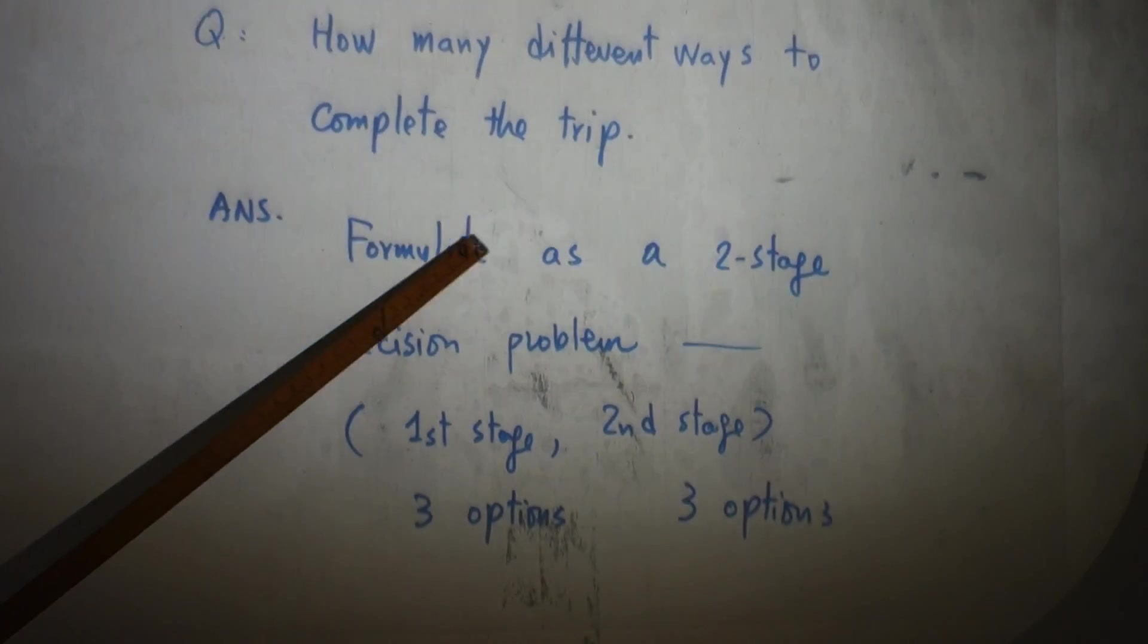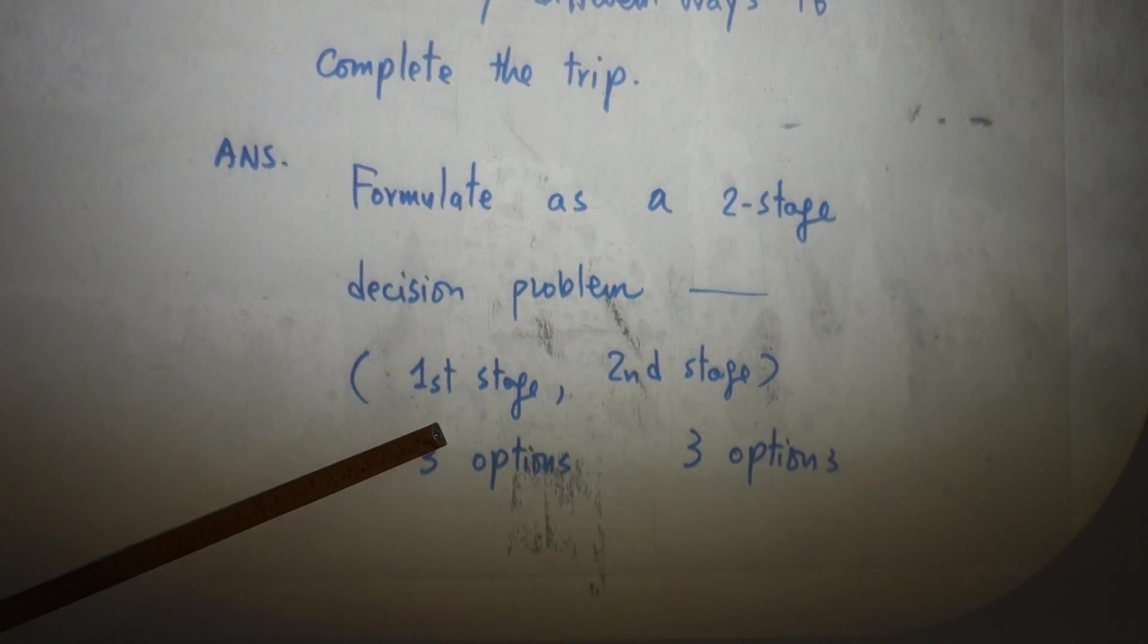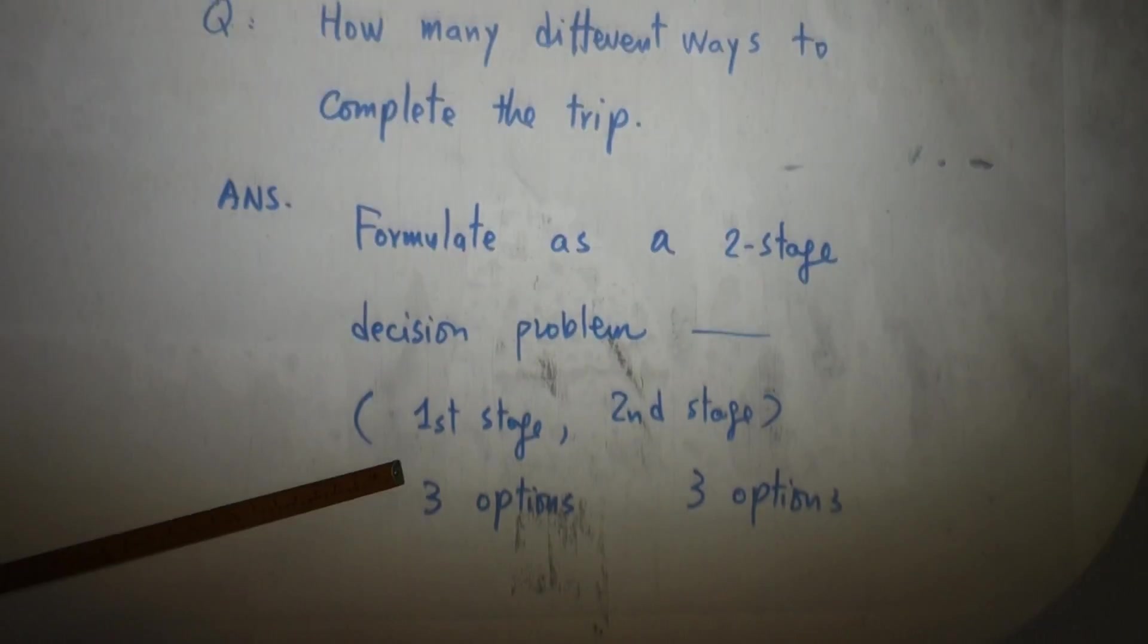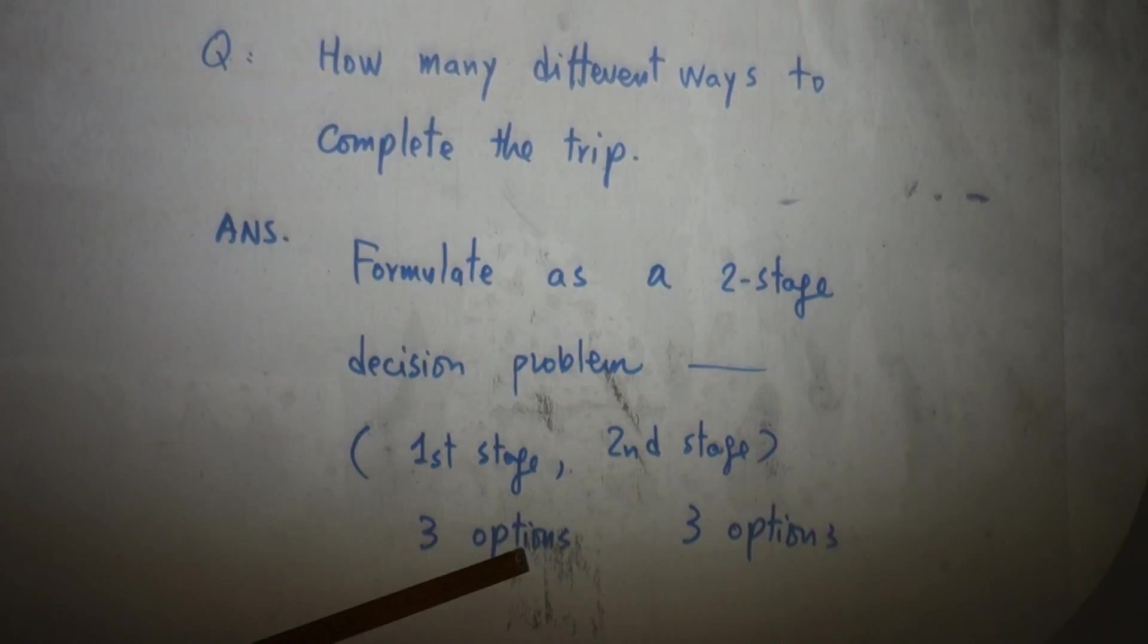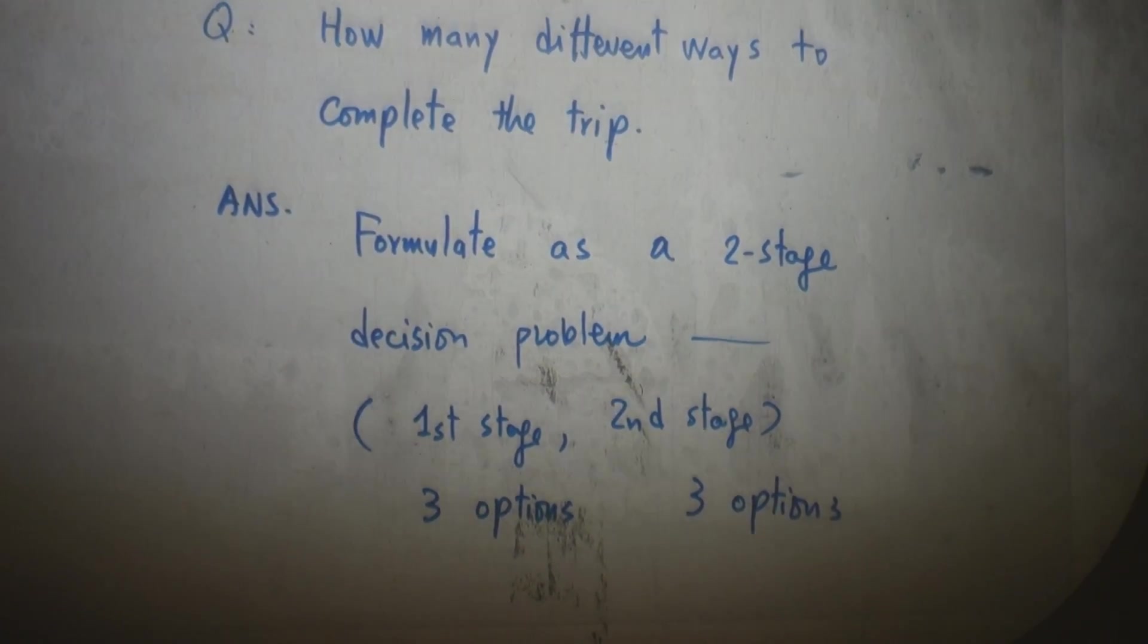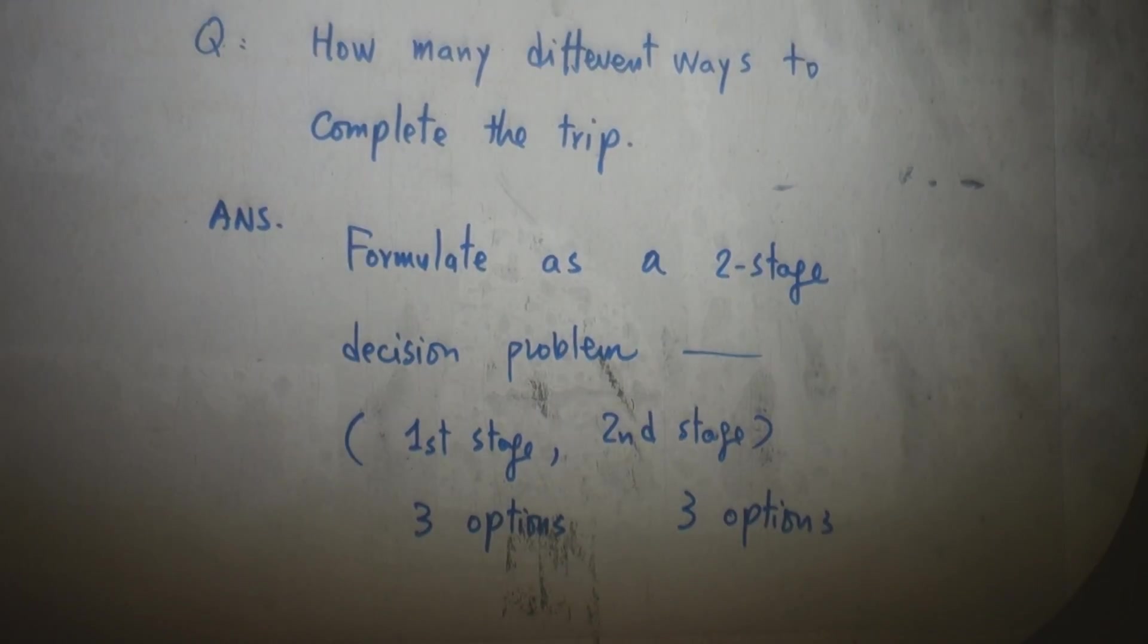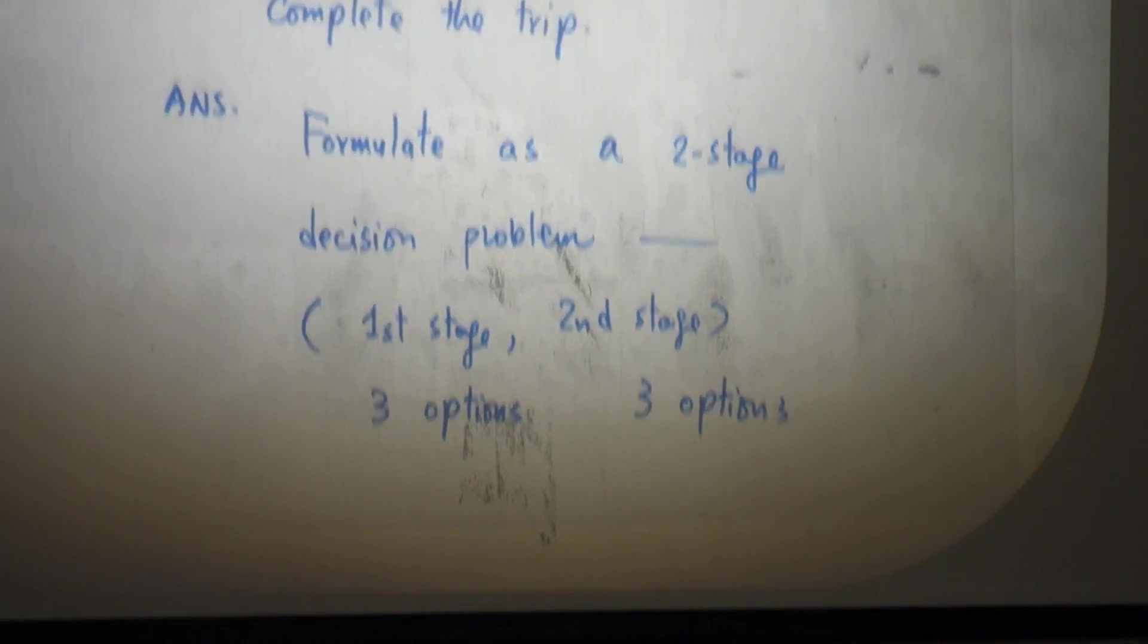And the answer - we can formulate this as what? A two-stage decision problem. First stage we have three options, second stage we also have three options. So the question is, how many possible ways to complete the trip? Is it three times three or three plus three? What do you think? The answer is three times three. Why is three times three?